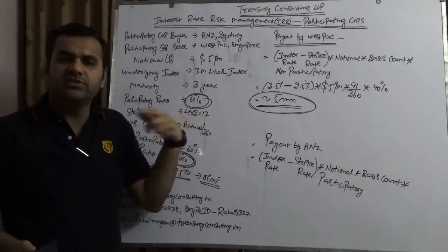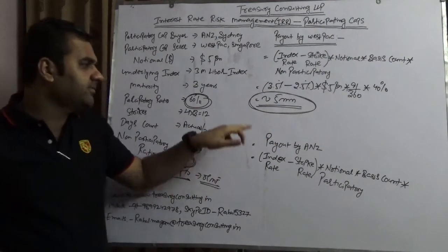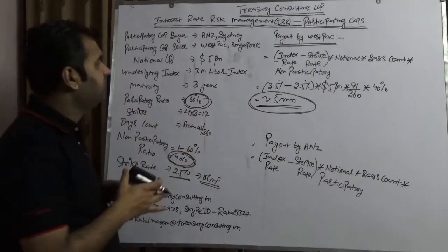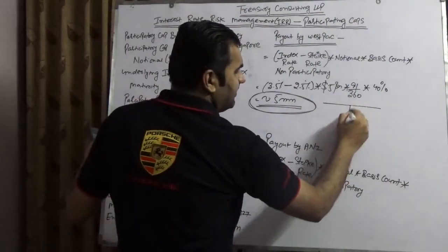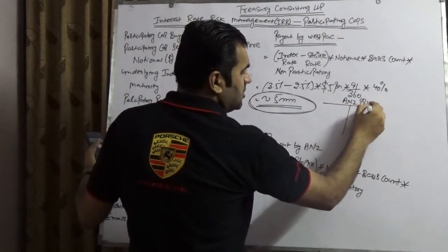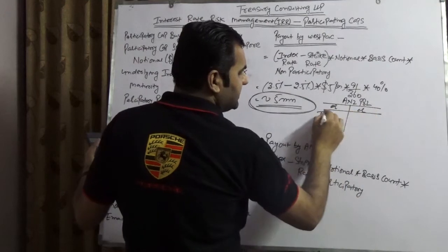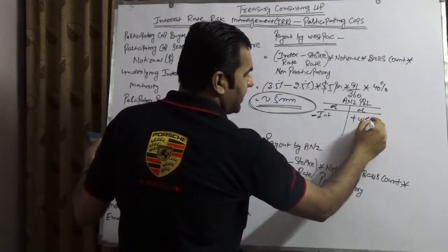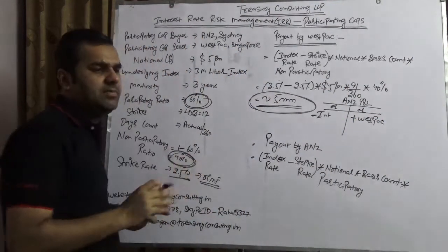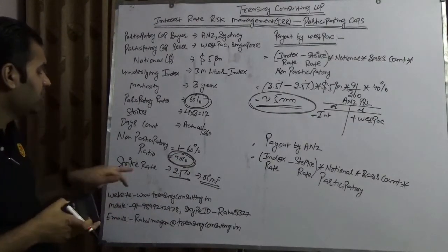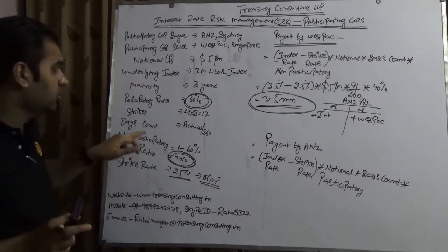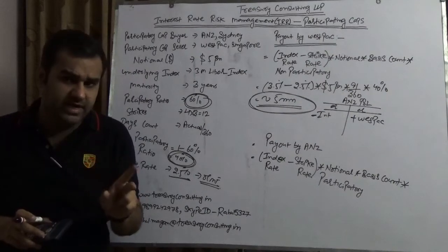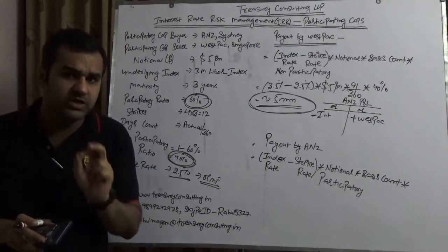So Westpac pays roughly 5 million dollars to ANZ. The floating liability which ANZ is paying would get compensated from this amount. On the debit side of the floating liability in ANZ's P&L, and on the credit side is the Westpac payment — to an extent you would be able to knock it off, but only till the non-participatory level. Henceforth, I already told you, this participatory level — we need to be very cautious, don't take it for granted, which people generally do.